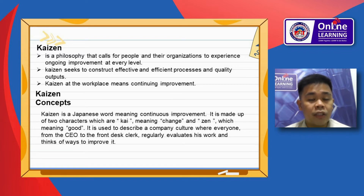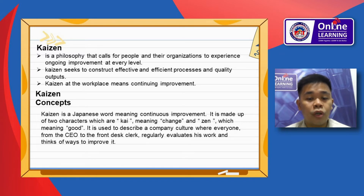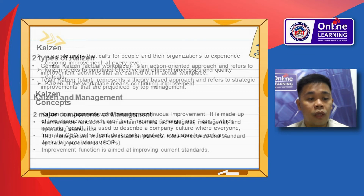Kaizen Concept: Kaizen is a Japanese word meaning continuous improvement. It is made up of two characters: Kai meaning change, and Zen meaning good. It is used to describe company culture where everyone from the CEO to the front line regularly evaluates their work and thinks of ways of improvement.